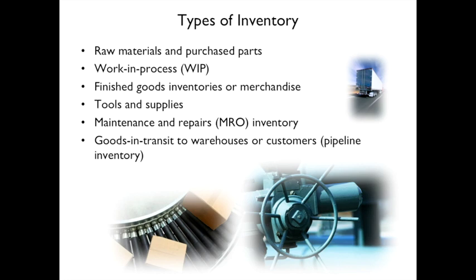Finished goods inventory, or merchandise. So you have the chair built and it goes into the warehouse — that's inventory. Then there are tools and supplies. Some tools may be used over and over again, and some of them may be disposable.